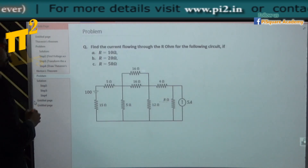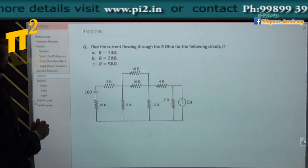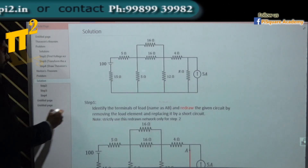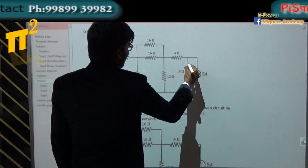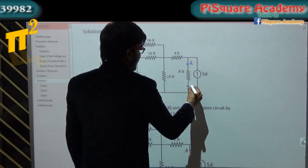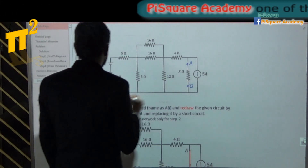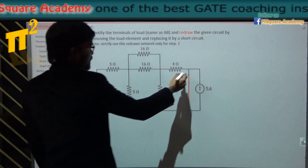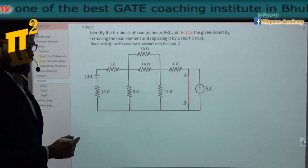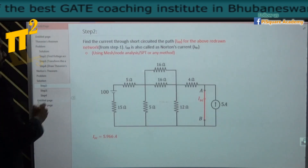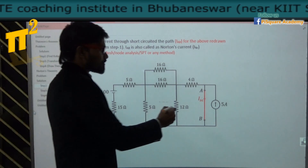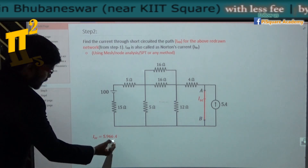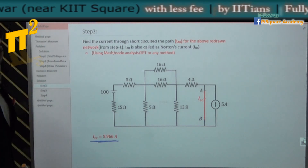Let's solve the same problem using Norton's. Step 1: identify terminals A and B, remove the load element, and replace it with a short circuit. Step 2: find current ISC using mesh, superposition, node, or any method. I got the current as 5.966 amperes.